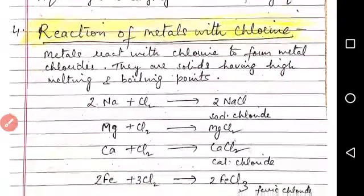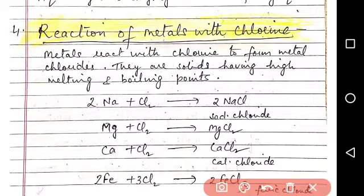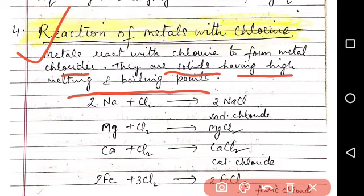Next reaction is reaction of metals with chlorine. Metals react with chlorine to form metal chlorides. They are solids having high melting and boiling points. For example, sodium reacts with chlorine, forms sodium chloride. Magnesium reacts with chlorine, forms magnesium chloride.